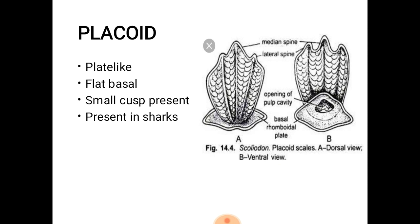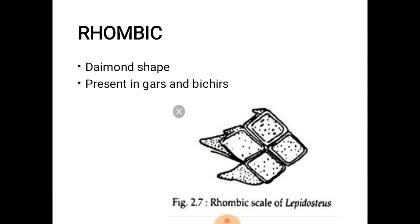Placoid scales are plate-like; they have a flat base and a small cusp, as can be seen in the diagram. They are present in sharks. Rhombic scales are diamond-shaped.